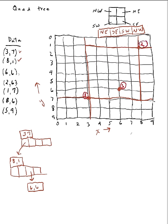The next node to insert is (2,6). Compared to the root node (3,7), the point (2,6) is in the northwest quadrant. I look at the northwest child of the root — it's empty — so I insert (2,6) there as the new leaf at that position. That was the fourth node I inserted, and that node divides its area into four quadrants, serving as an exemplar for that whole region.